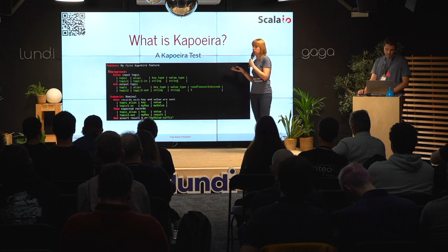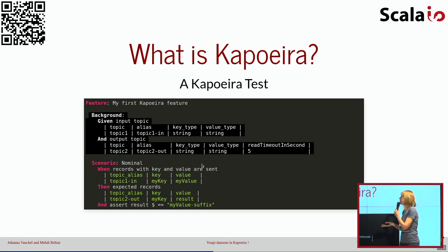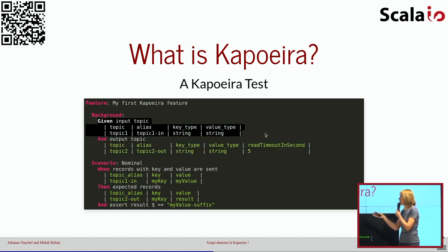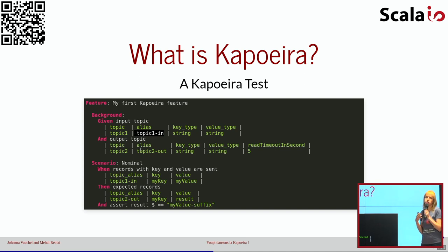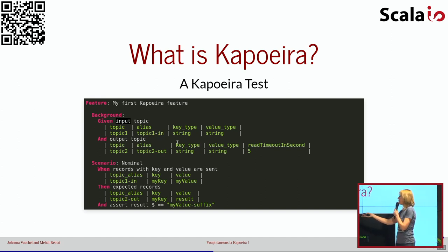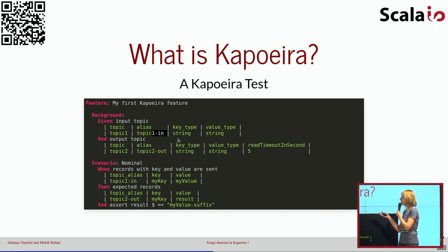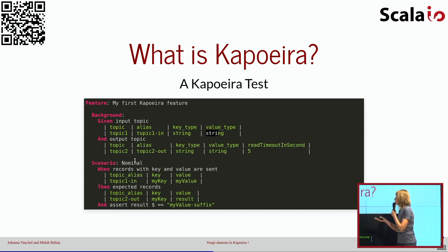Dans ce test, on a repris le même exemple qu'avec le Topology Test Driver — c'est le même test, mais à la sauce Capoeira. Dans la partie background, on retrouve la définition de la topologie. On commence par définir le topic d'entrée, input topic, sous forme de tableau. On a le nom du topic, topic1, et un alias. Ça permet de définir les noms de topic quand ce n'est pas parlant ou que ce sont des noms très longs. On va préciser le typage : clé en string, valeur en string. Et on va préciser les topics de sortie. Output topic : topic2, aliasé topic2.out, avec les typages clé et valeur. Et là, on va mettre 5 secondes pour que le Kafka Stream fasse son opération.